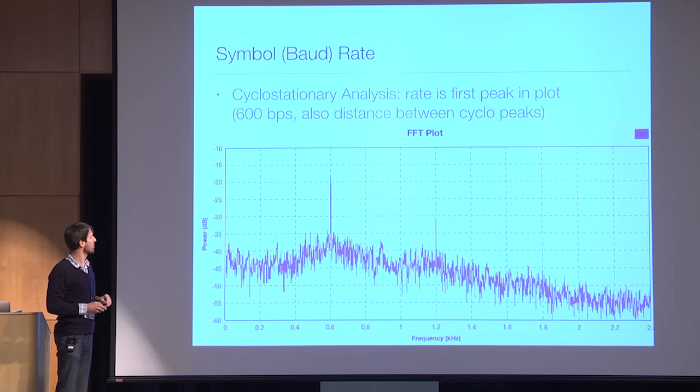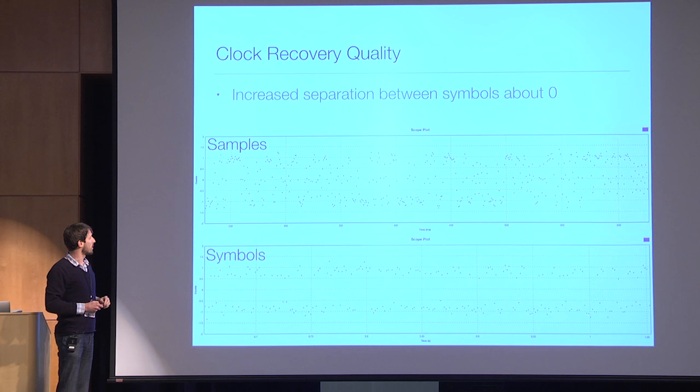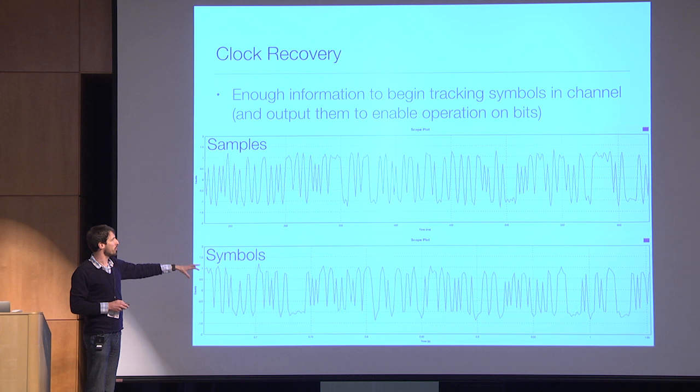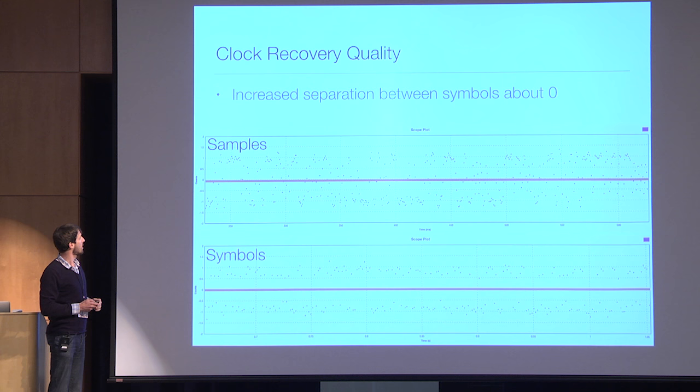Then you simply do your usual clock recovery. What I quite like is when you're looking at samples versus symbols, you can turn them into dots and see that with good clock recovery you get a nice wide space between your top and bottom symbols. That's a neat marker for that, and the SNR is pretty decent.